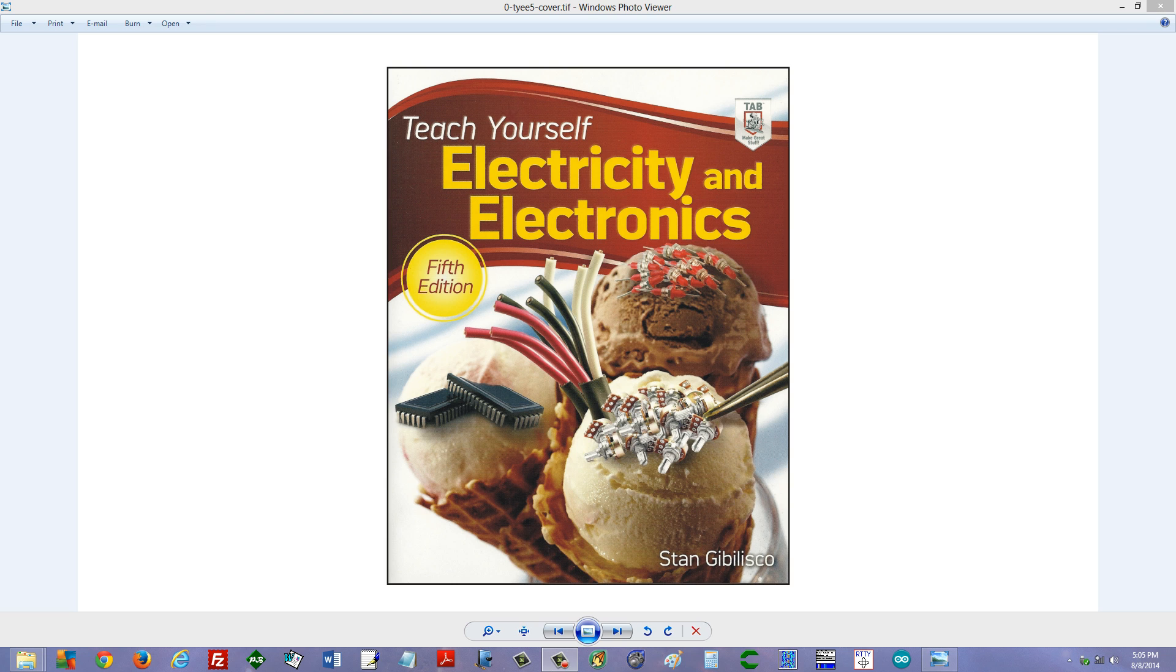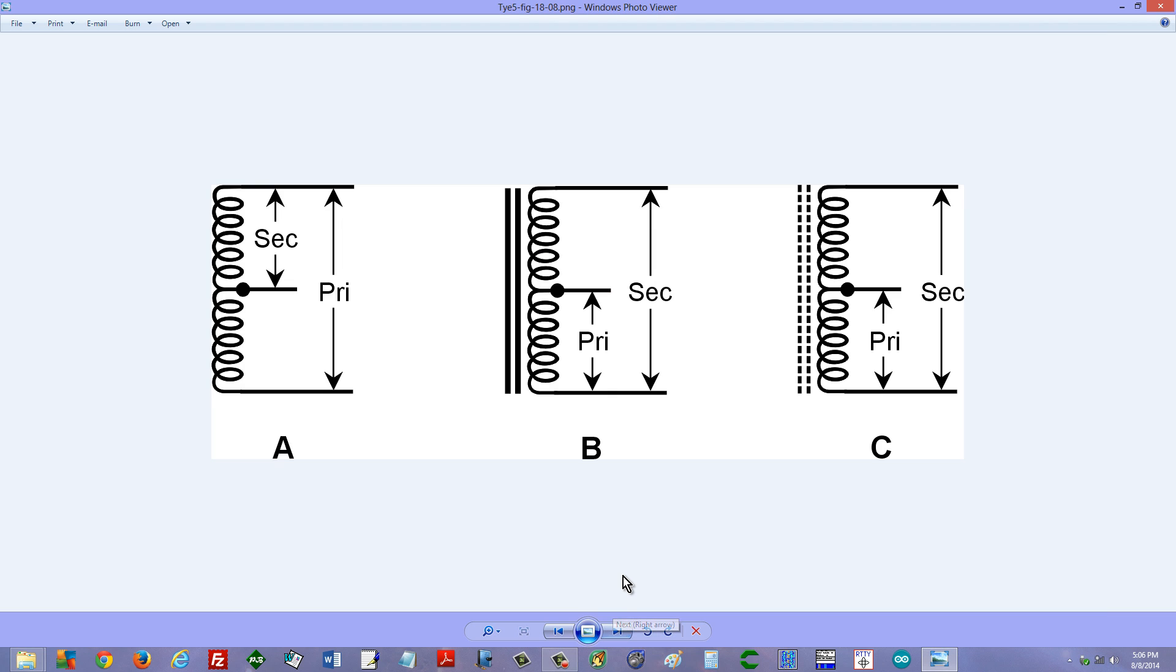And then a little example of something from that book that you'll find in Chapter 18, and that is the concept of an auto transformer. What is an auto transformer? Well, we're looking right now at Figure 18-8, and there are three examples of auto transformers.